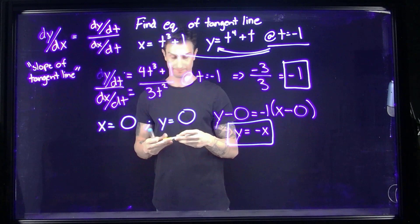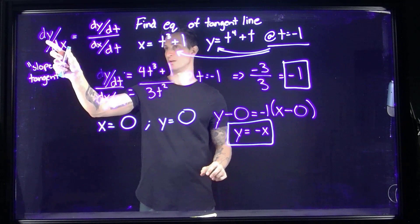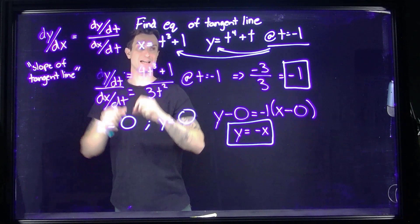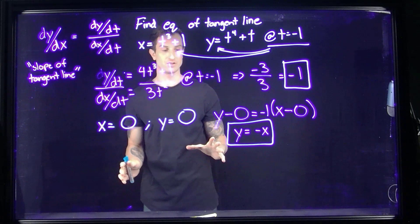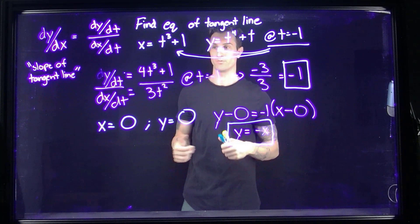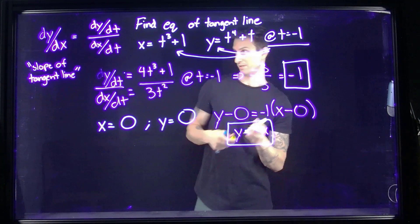Notice the only thing new we've added here is the dy/dx formula — it's not a big concept. The key is remembering our derivative rules from previous classes. Here we just used the power rule. But moving forward we'll need to recall the product rule, quotient rule, and chain rule as well.